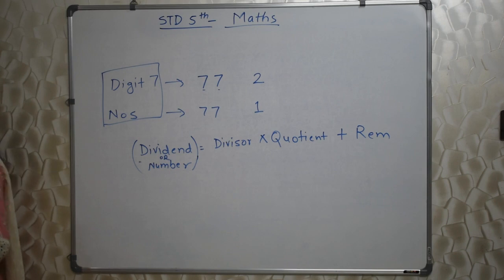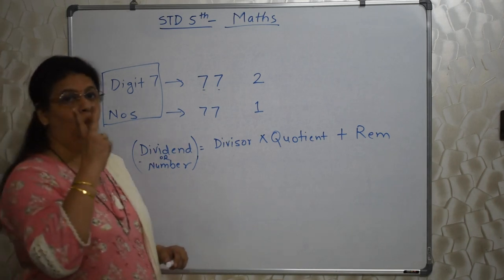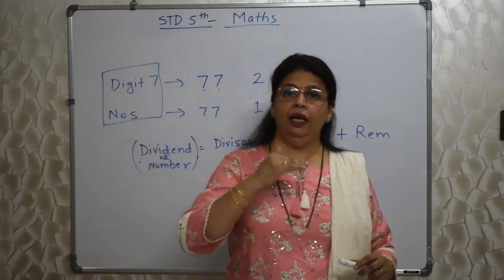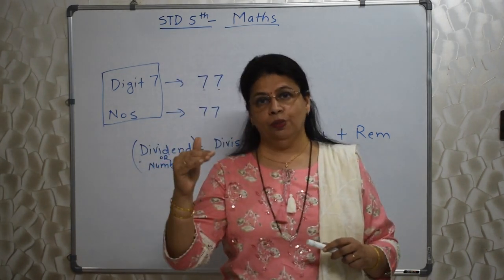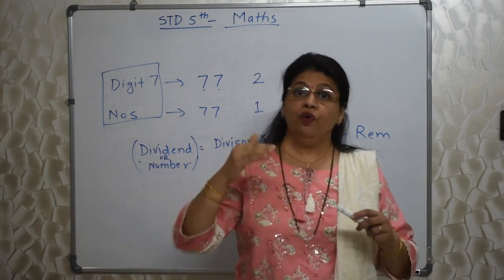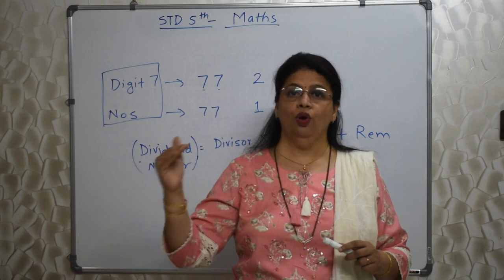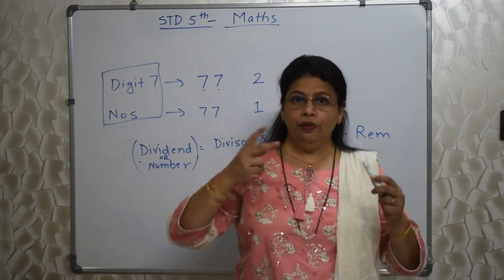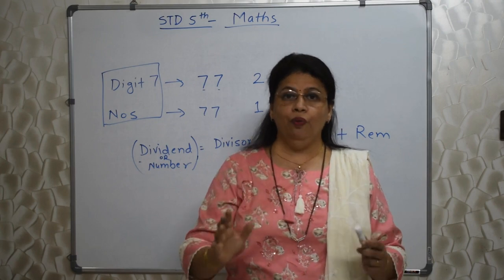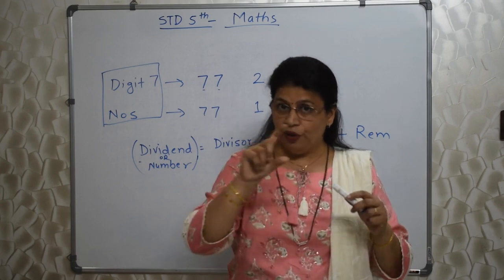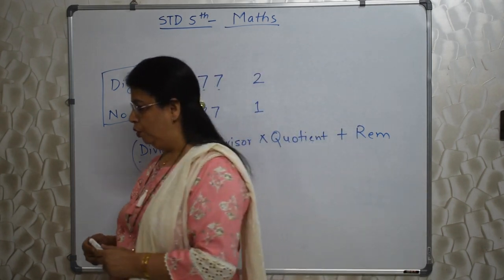Profit and loss — there are only 2 formulae. If selling price is more: Selling Price minus Cost Price gives us profit. If cost price is more: Cost Price minus Selling Price gives us loss. Find out what has been given in the question and then use the proper formula.